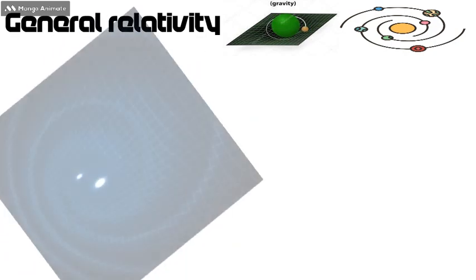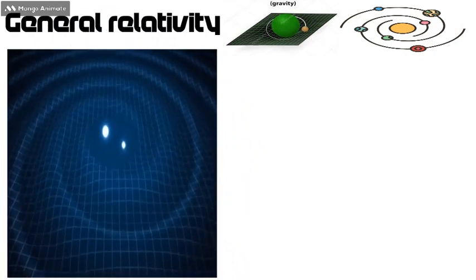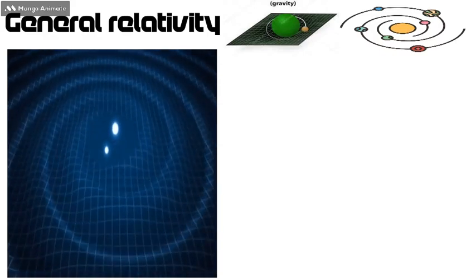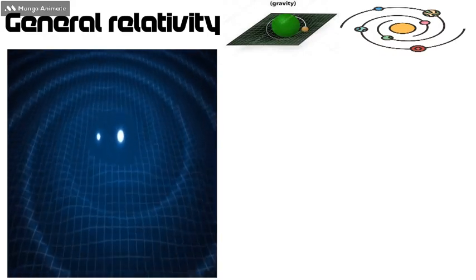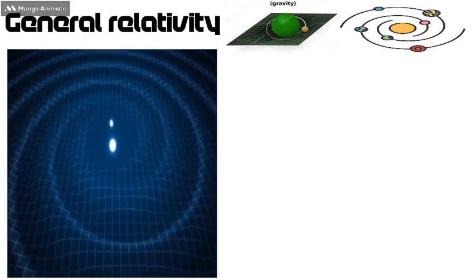General relativity explains the law of gravitation and its relation to other forces of nature. It applies to the cosmological realm. The general theory of relativity can be summed up in just a few words: space-time tells matter how to move, matter tells space-time how to curve, and rotating masses drag along the space-time around them.